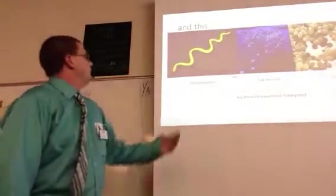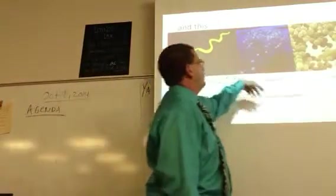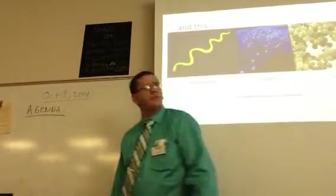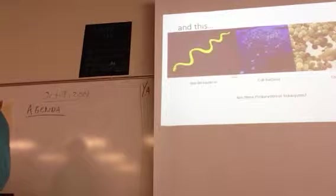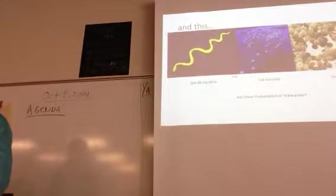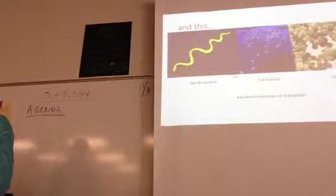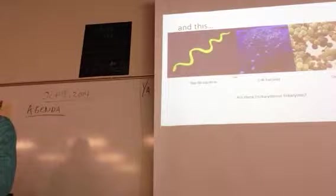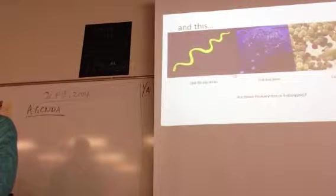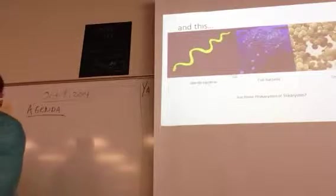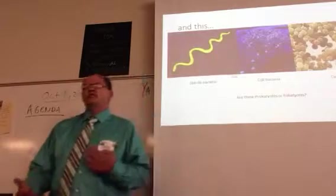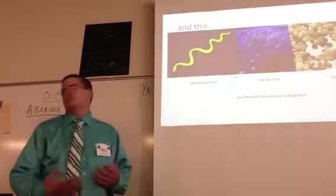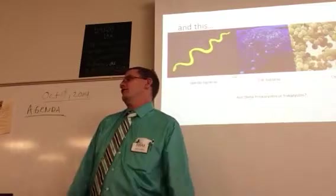And here's another kind of cell. These are bacteria cells. We've got spirals, we've got rods, we've got spheres. Anybody know whether these are prokaryotes or eukaryotes? Eukaryotes are typically plants and animals. Bacteria are going to be under the category of prokaryotes. The main distinguishing thing between prokaryotes and eukaryotes is prokaryotes don't have nucleus, and they're missing a lot of the organelles.